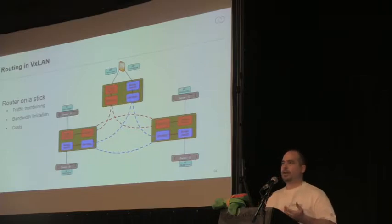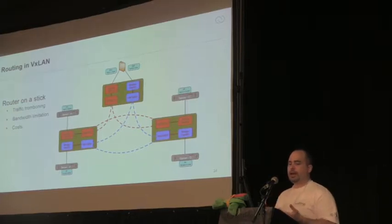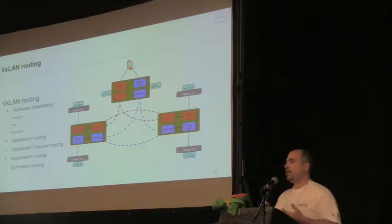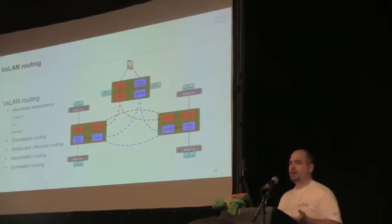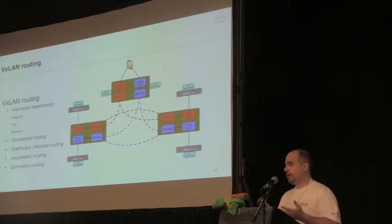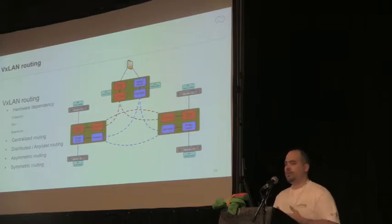Routing in VXLAN was added to several chipsets. You can implement it in several ways. One way is centralized routing — instead of configuring SVIs on a firewall at the edge, you have centralized routing where SVIs are configured on a central node. That still means traffic tromboning, so you have to consider whether to use that based on your traffic flows. If you don't have a lot of east-west traffic and most goes to the outside world, this could be a solution.